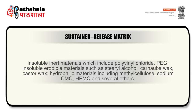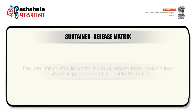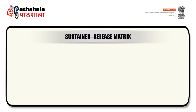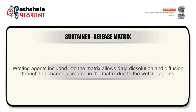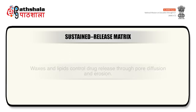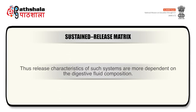Materials used to form matrix tablets are classified into three types: insoluble inert materials which include polyvinyl chloride and PEG; insoluble erodible materials such as stearyl alcohol, carnauba wax, and castor wax; and hydrophilic materials including methylcellulose, sodium carboxymethylcellulose, HPMC, and several others. The rate-limiting step in controlling drug release from insoluble inert polymers is penetration of liquid into the matrix. Wetting agents included in the matrix allow drug dissolution and diffusion through channels created by the wetting agents. Waxes and lipids control drug release through pore diffusion and erosion, so release characteristics of such systems are more dependent on the digestive fluid composition.